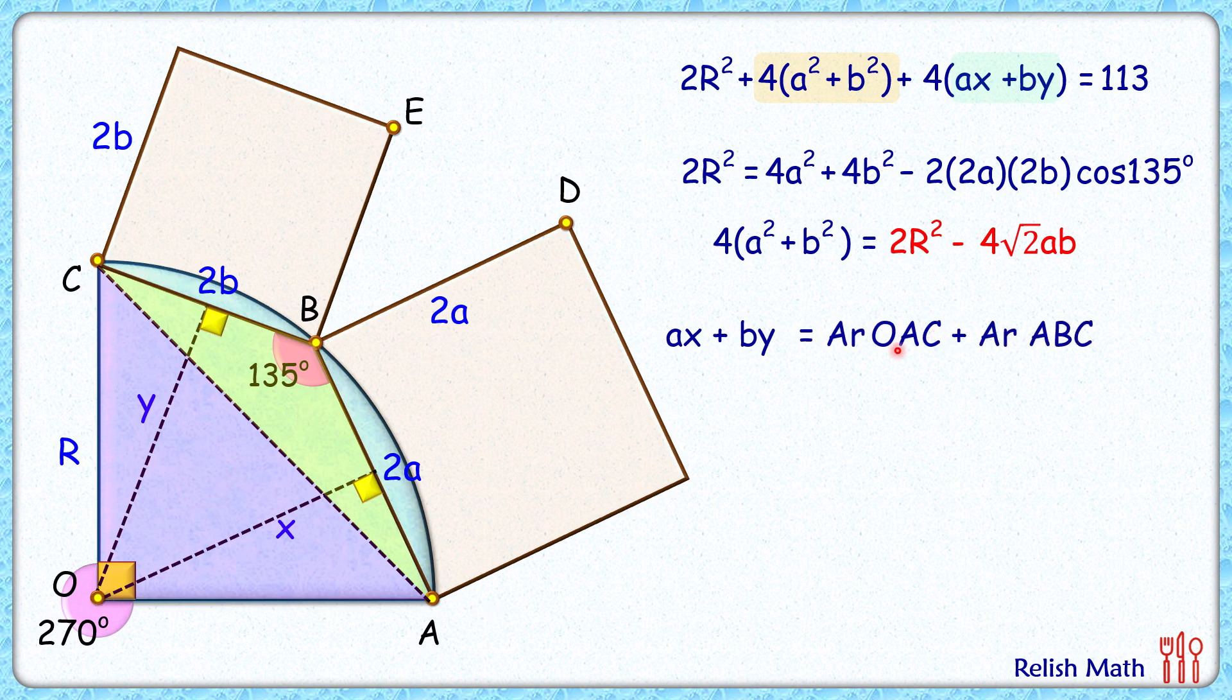Or area of triangle OAC plus area of triangle ABC. OAC area is easy, that is half of base into height. Base is r, height is r, so this is half of r². How about this yellow triangle? We'll use the formula: area of triangle is half of side 1 into side 2 into sine of the angle between them. So this pink triangle OAC is half of r², and area of triangle ABC is half of side lengths times sine of the angle between them. Sine 135° is 1/√2, so putting this value here we'll get ax + by as ½r² + √2ab. Now these two values, this one in red and green, we can replace in our original equation.